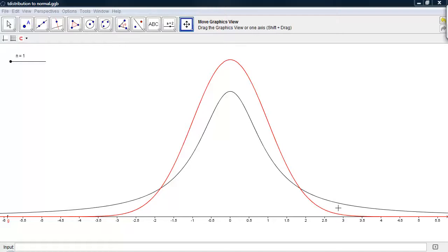This incorporates the variability that results from using the sample standard deviation rather than the population standard deviation.